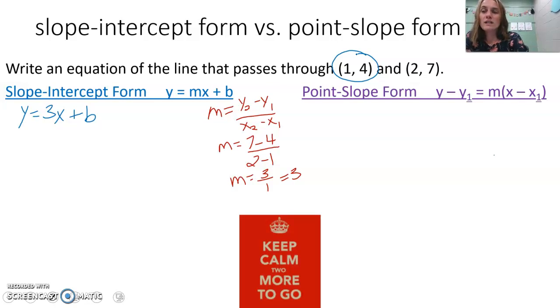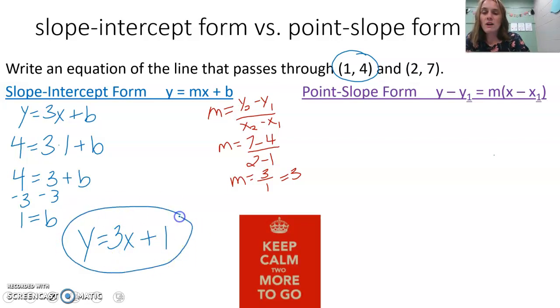I plug 4 in for y: 4 = 3(1) + b. Simplifying that equation, 3 times 1 is 3. Then I subtract 3 to get b by itself, and b equals 1. So now my equation is y = 3x + 1. That would be our final answer.